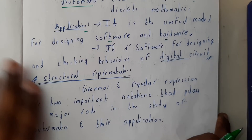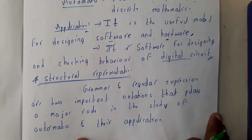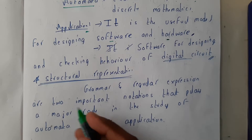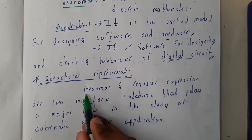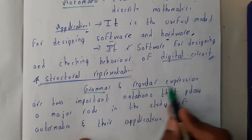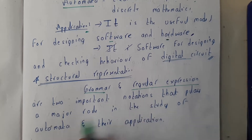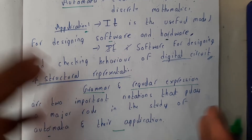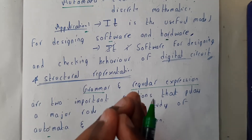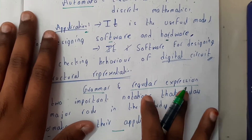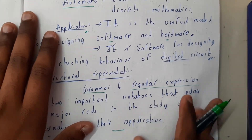Now let us go through the basic structural representations. The representations are grammar and regular expressions — the two important notations that play a major role in the study of automata and their applications. We can represent any kind of automata in terms of grammar or in terms of a regular expression.